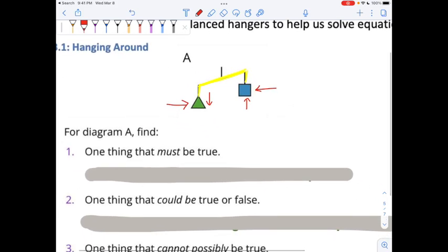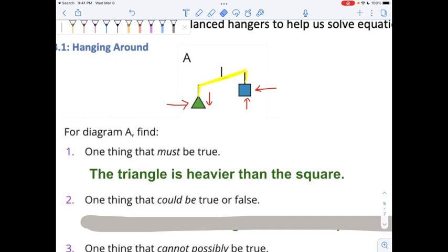The triangle is lower than the blue square. So that tells me a couple of things, right? For diagram A, something that must be true is that the triangle must be heavier than the square. Because this hanger is not flat across, like the one with the pink socks, I know that the triangle is heavier than the square.